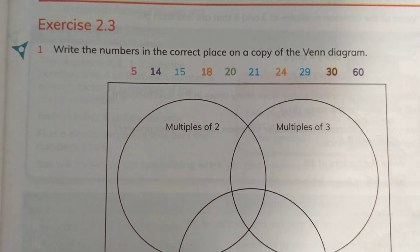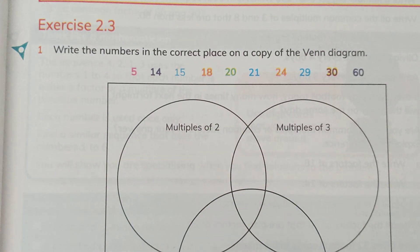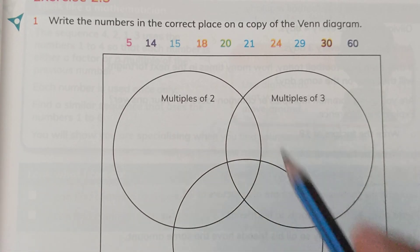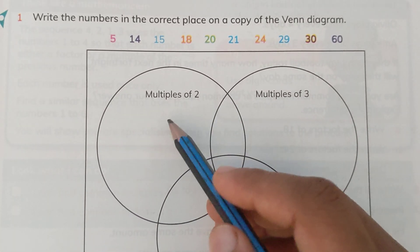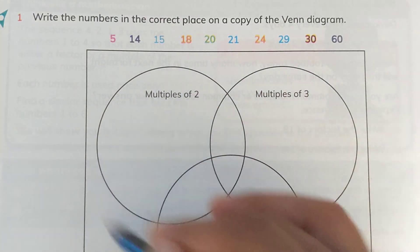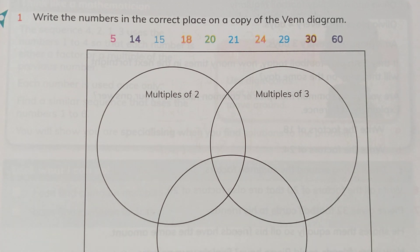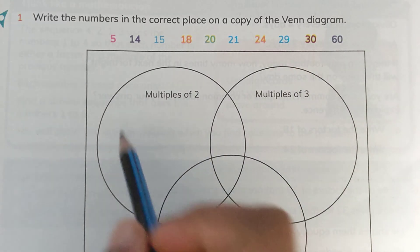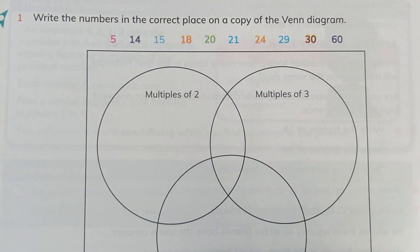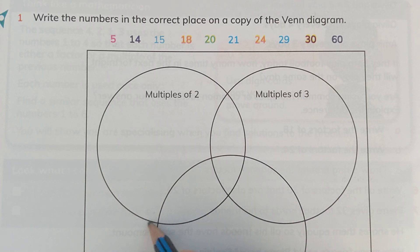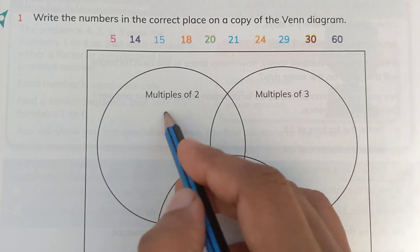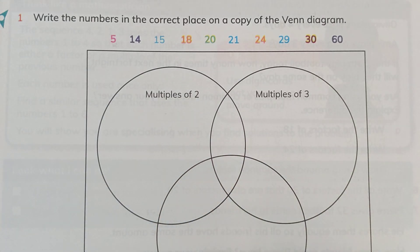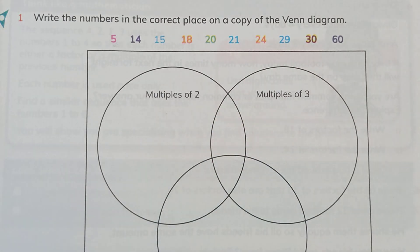Exercise 2.3, question number 1 says: write the numbers in the correct places. We are provided with a Venn diagram — this diagram is called a Venn diagram — where we have three circles, each for a different multiple. We have to write down the multiples of 2 in the first circle, multiples of 3 in the second circle, and multiples of 5 in the third circle. There is a twist: when we talk about 5, it is only a multiple of 5, so we write it in the circle but not in the overlapping parts.